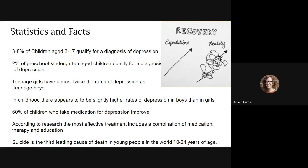Sixty percent of children who take medication for depression show that they improve. According to research, the most effective treatment for depression includes a combination of medication, therapy, and education. The education piece comes into play especially for children when a lot of their progress and recovery is dependent on their family and how much their family buys into the treatment plan. So the education piece is not just for the person who has depression, but also for the family.